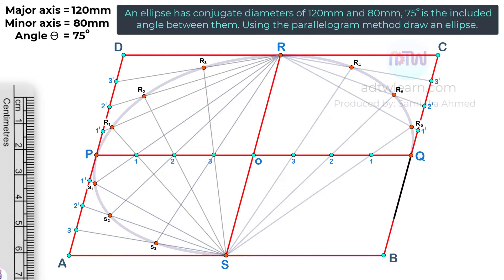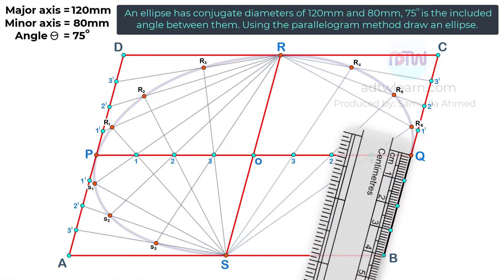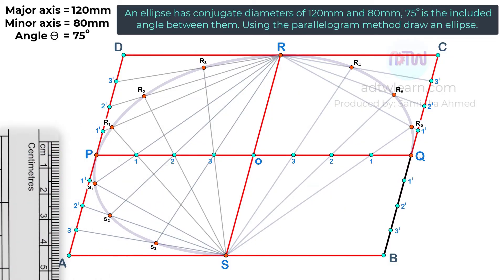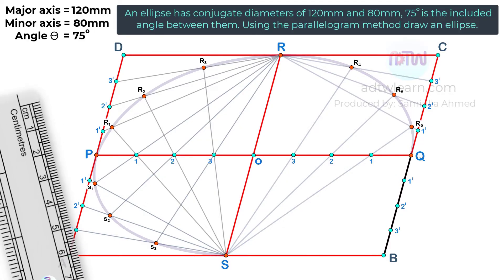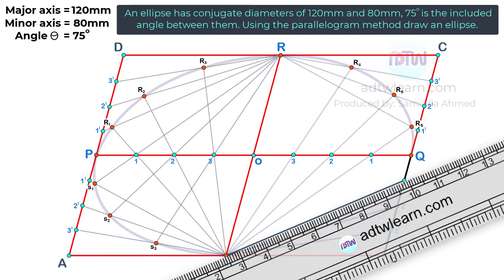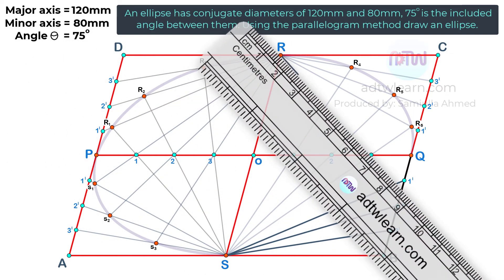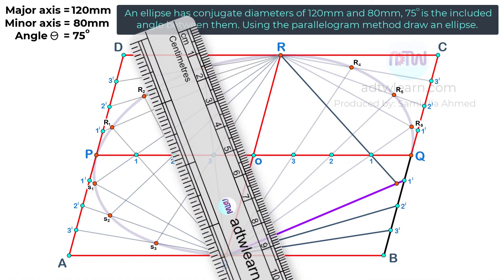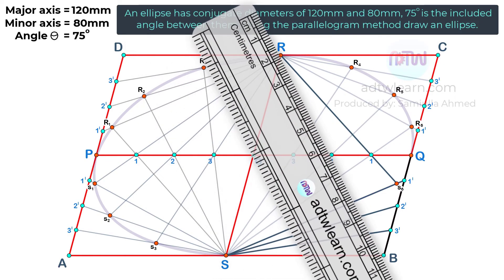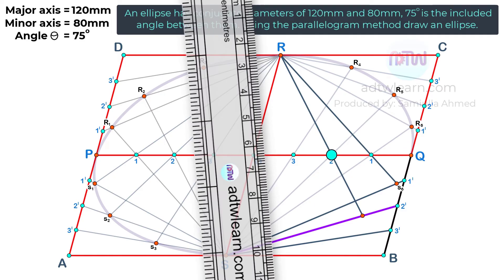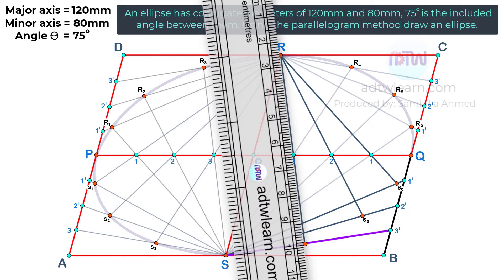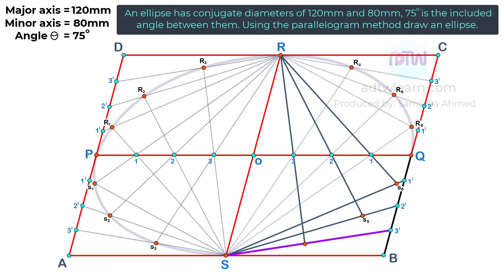At last, divide this line QB into four parts and name these points as 1 dash, 2 dash, and 3 dash. Next, join these points to point S. Draw a line from point R to line 1 dash S, passing through point 1 — mark this intersection point as S6. Next, draw a line from point R to line 2 dash S, passing through point 2 — mark this intersection point as S5. At last, draw a line from point R to line 3 dash S, passing through point 3 — mark this intersection point as S4. If we join these points — S, S4, S5, S6, and Q — we get the fourth one-fourth of an ellipse.